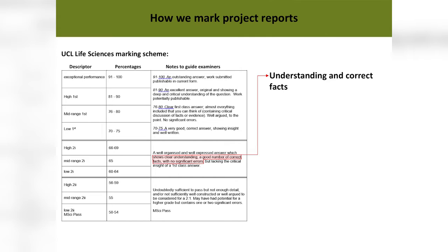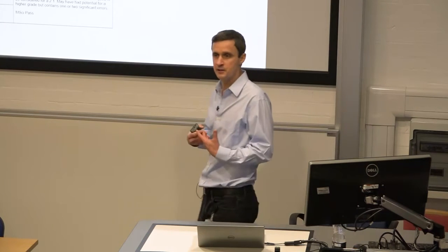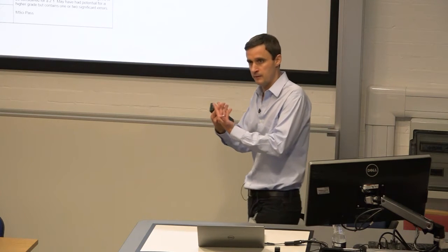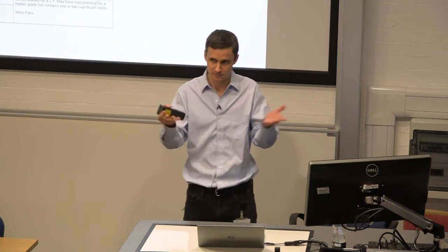I've picked out anything from a 2-2, second class second division, up to what we should be targeting: a 2-1, an upper second class degree. The key point here is that what you're writing should show clear understanding and include a good number of correct facts with no significant errors. Underlying all of this, of course, is that you've understood the literature, understood the science, the numbers, the statistics — carried it out well and produced good, accurate information.